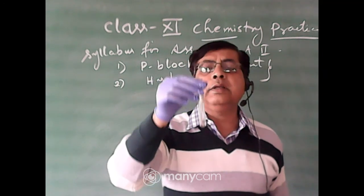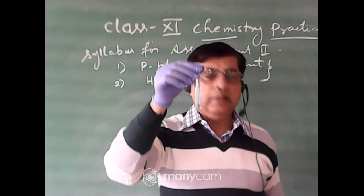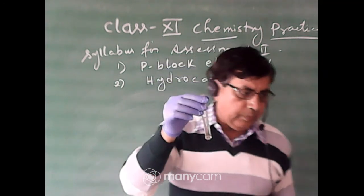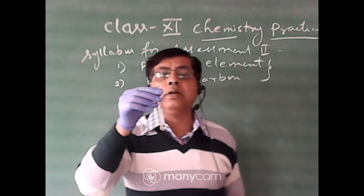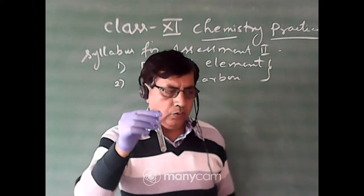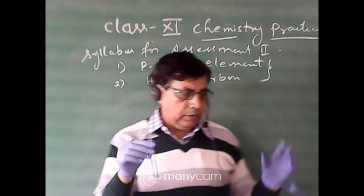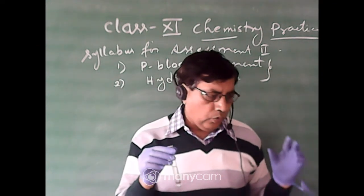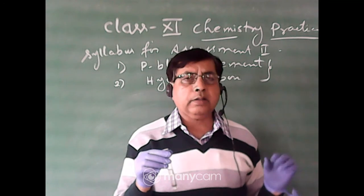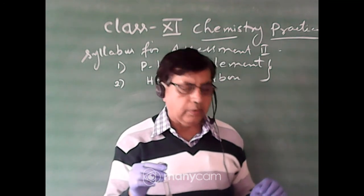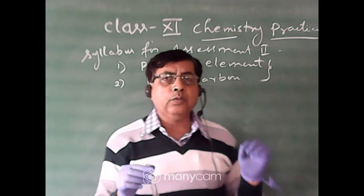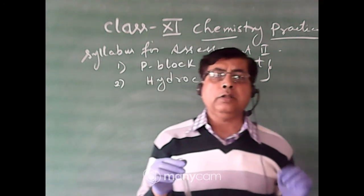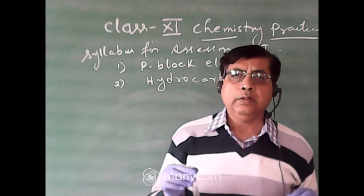So the brown ring confirms that the given sample contains nitrate ion. This is the wet test for the unknown sample. First you prepare the original solution, then take a small amount of original solution and add silver nitrate solution.